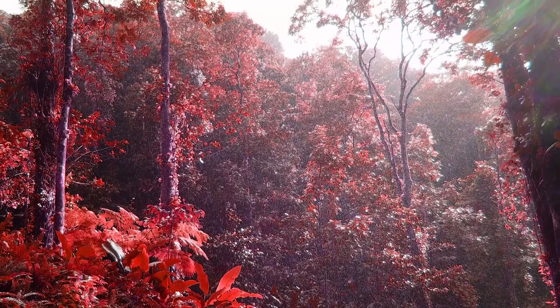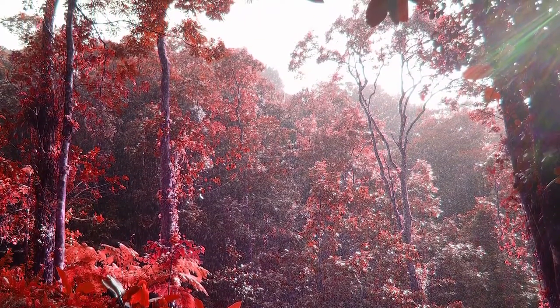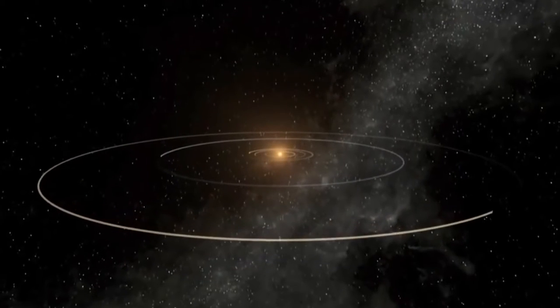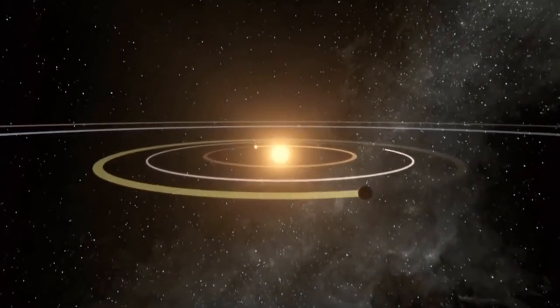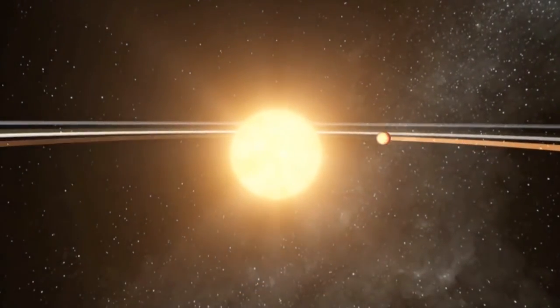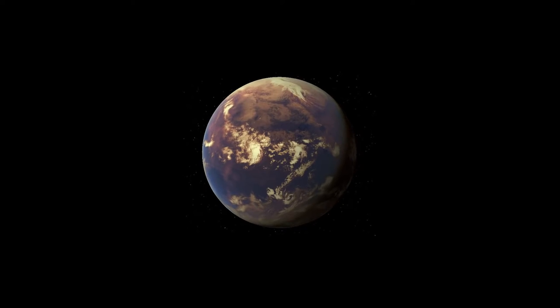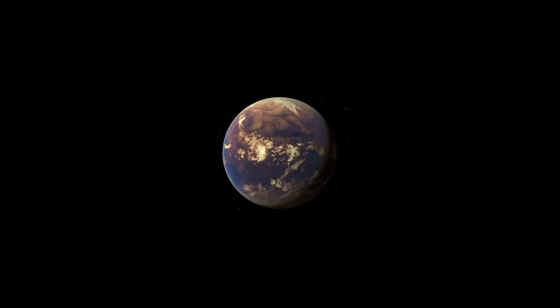It is speculated that more planets fitting the superhabitable model may exist compared to Earth-like planets. Nine percent of stars in the galaxy are estimated to be long-lived K-type orange stars, and larger super-Earth planets could form around them. One candidate is Kepler-442b, located 1,120 light years away.